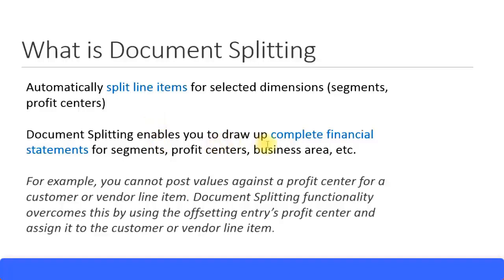Document splitting enables you to produce complete financial statements for segments and profit centers, and can also be used for other fields. Another example: if you have different branches in different locations and want to know the profitability and have a balance sheet for each branch, you can achieve the P&L statement easily. However, to have a complete balance sheet with all accounts receivable and accounts payable fields filled, you need to enable document splitting. Document splitting ensures that all customers and vendors are filled with the relevant profit center, not only the company code, giving you a complete balance sheet.